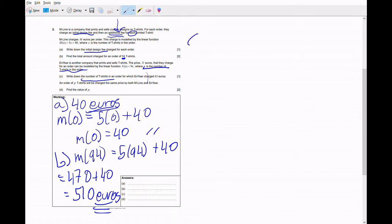And finally they tell us that an order of p t-shirts will be charged the same price by both M line and N year, and to find the value of p. So the function m(x) equals 5x plus 40 and n(x) equals 9x. Now they tell us that we need to find the value of p, and p is the amount of t-shirts. In both functions x is the amount of t-shirts, so just to be consistent with the problem we're going to replace it with p.